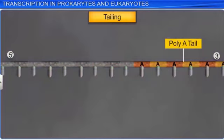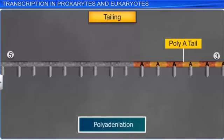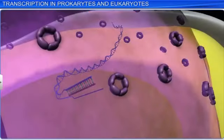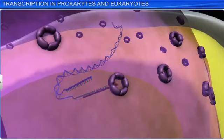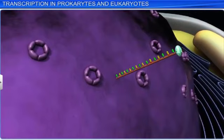Finally, in the tailing process, about 200 to 300 adenylate residues are added to the 3' end of the HnRNA in a template-independent manner, giving rise to a poly-A tail. This process is also known as polyadenylation. After these processes, the HnRNA becomes mRNA and the transcription process ends. The mRNA can now be transported out of the nucleus and further used for the process of protein synthesis during translation.